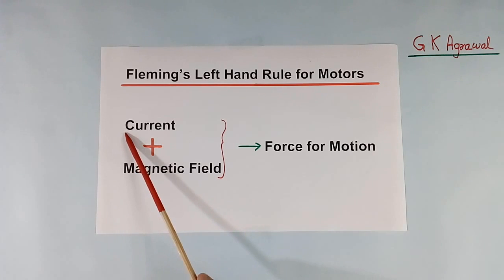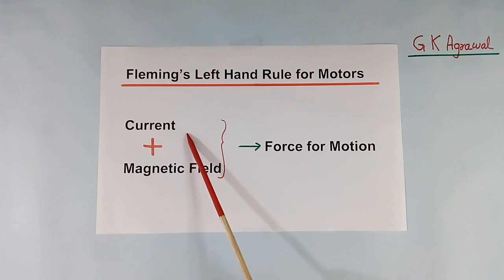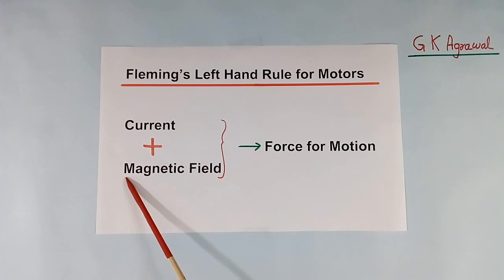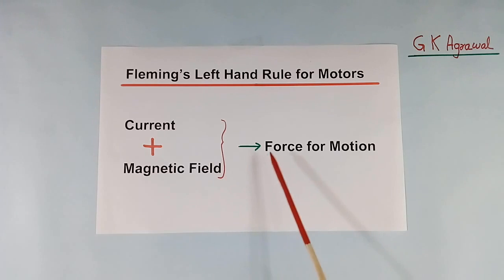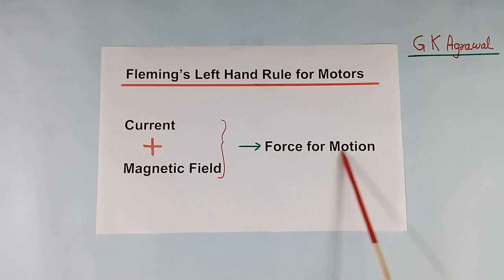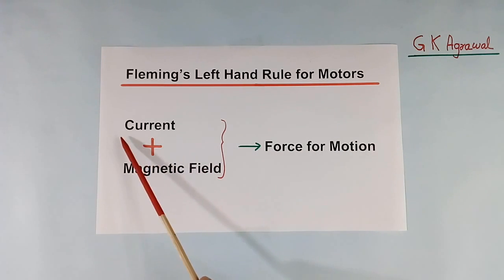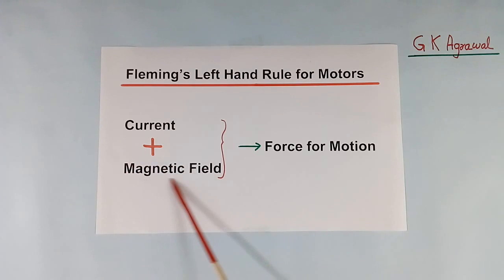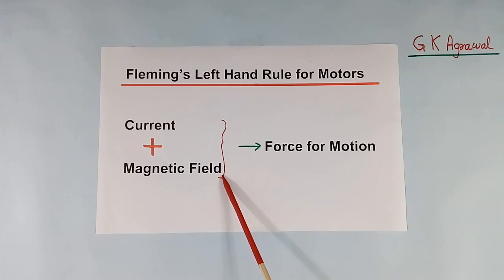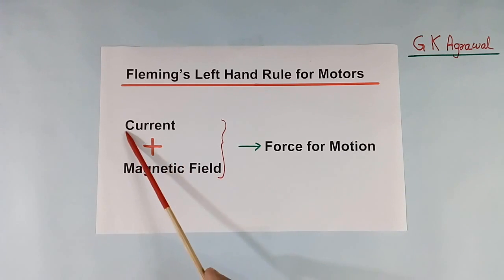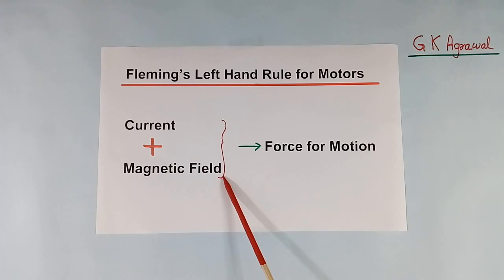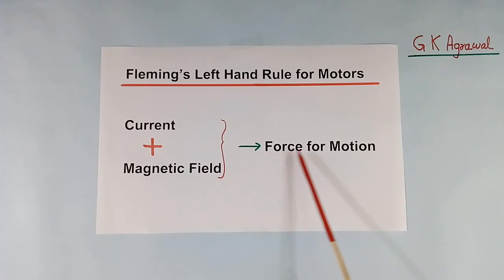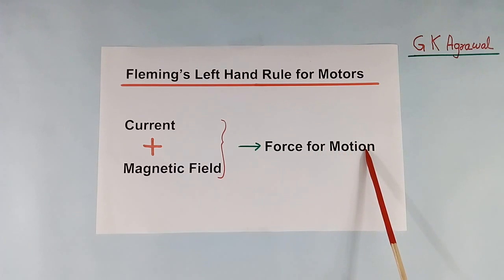Here I have written three things: one is current, second is magnetic field, and third is force, power, or motion. If we have current and magnetic field, then using current and magnetic field, force and motion can be generated.